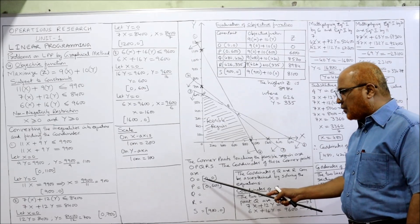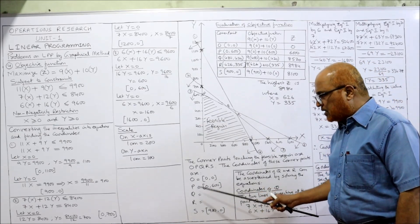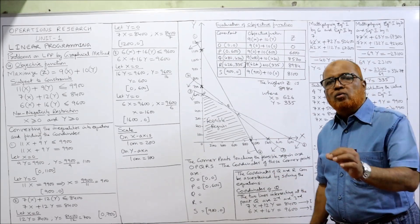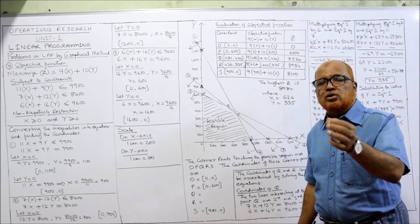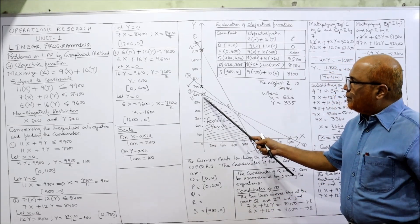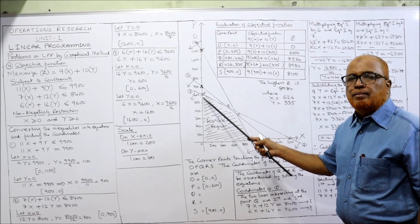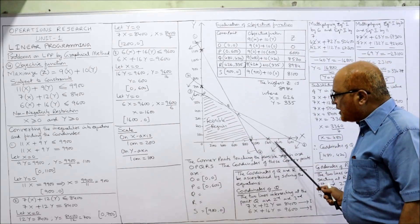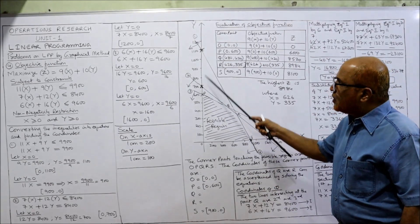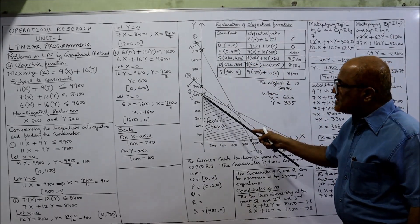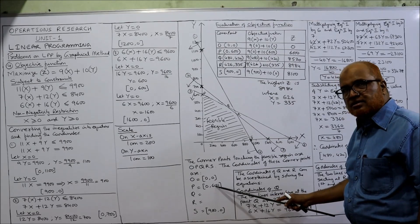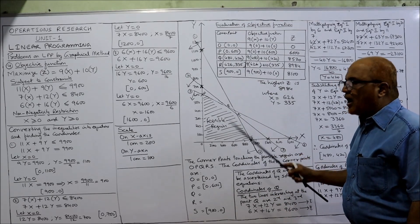The coordinates of corner points O, P, Q, R, S are needed. O is the origin, so coordinates are (0, 0). For P, by observation x = 0 and y = 600, since P lies on the y-axis at 600. So P is (0, 600). For S, by inspection x = 900 and y = 0, so S is (900, 0). Q and R require solving simultaneous equations.